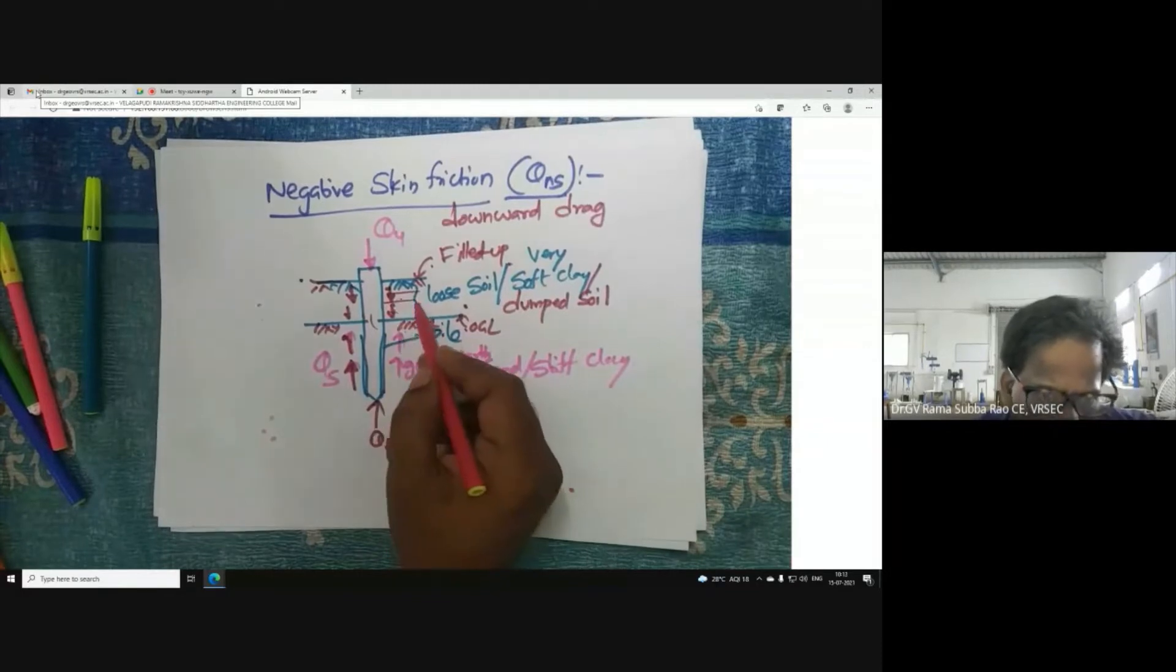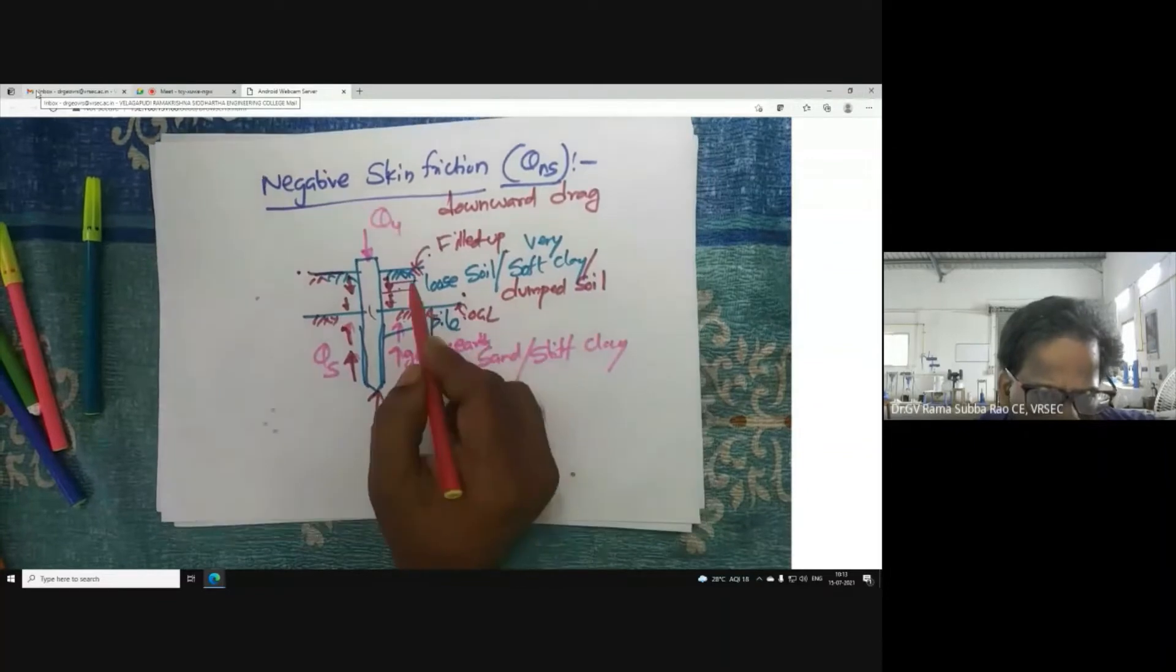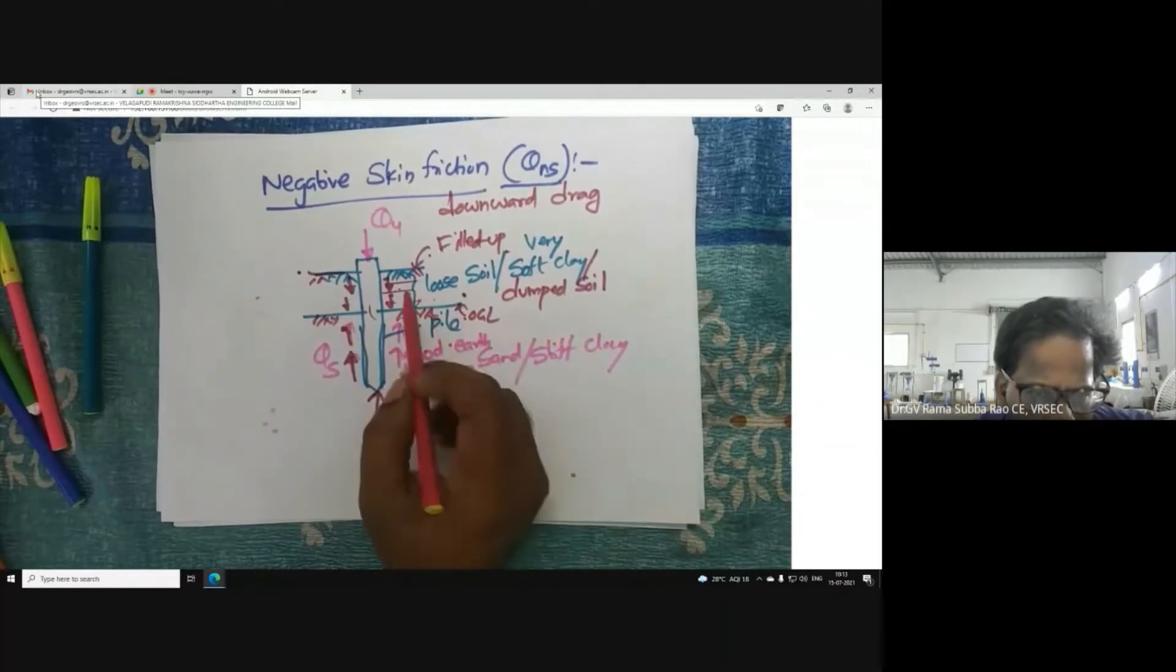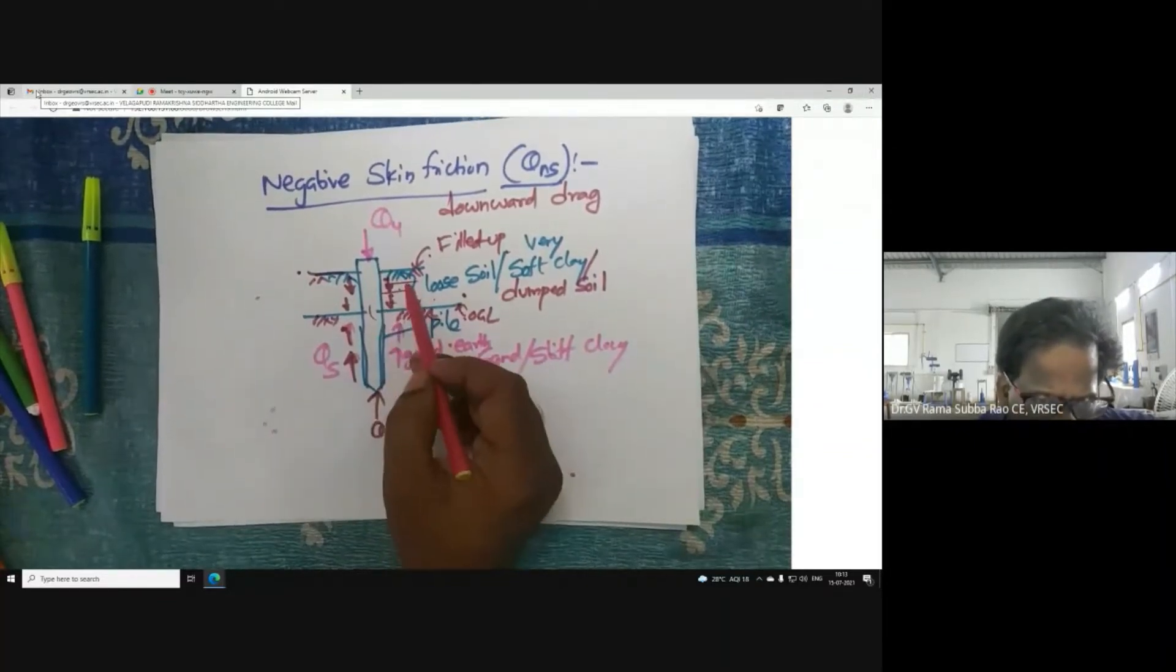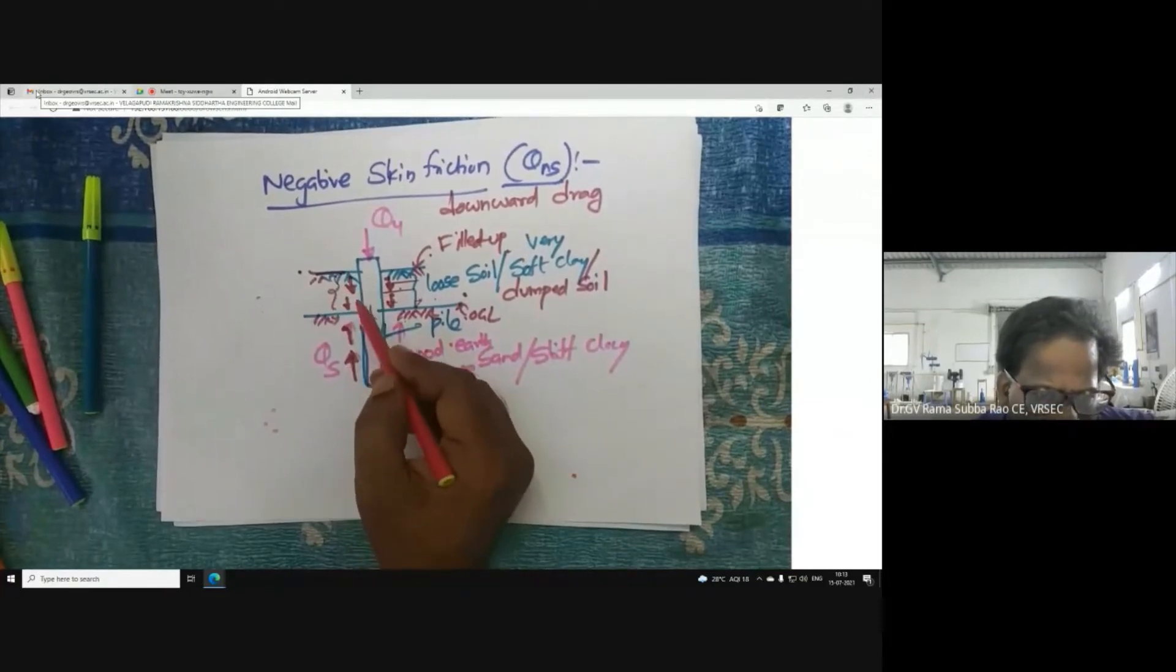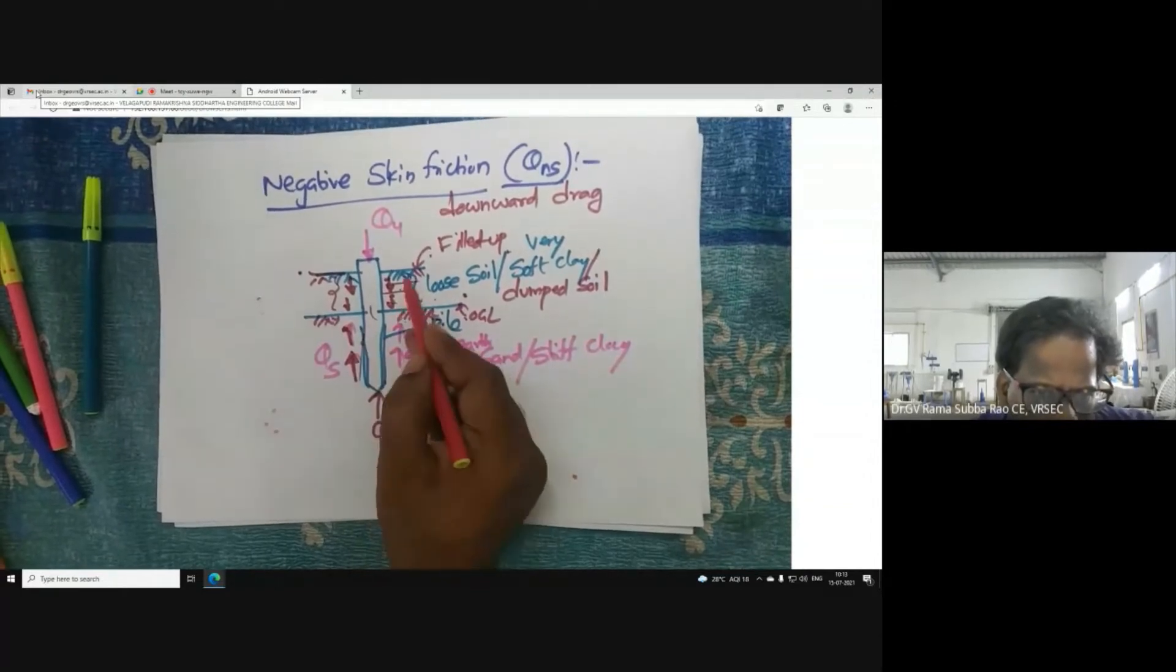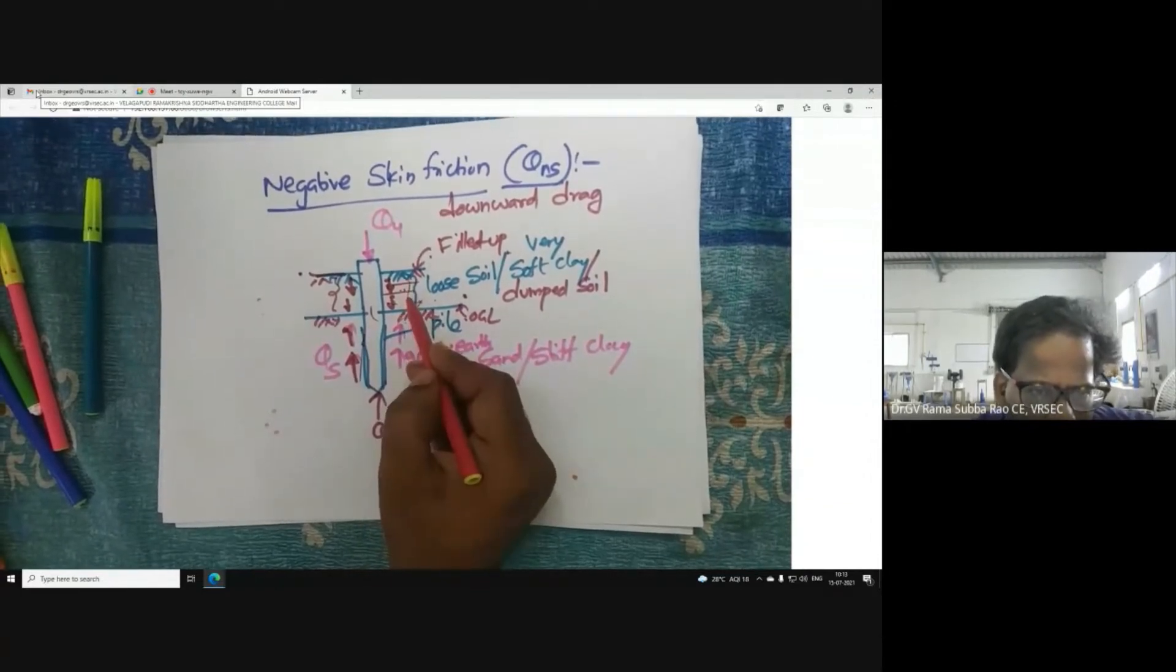It will not be loose soil. Sometimes what happens is we are trying to insert the pile in loose soil, especially in top layers. In fact, we are expecting skin friction - but it is not positive skin friction, it's negative skin friction.